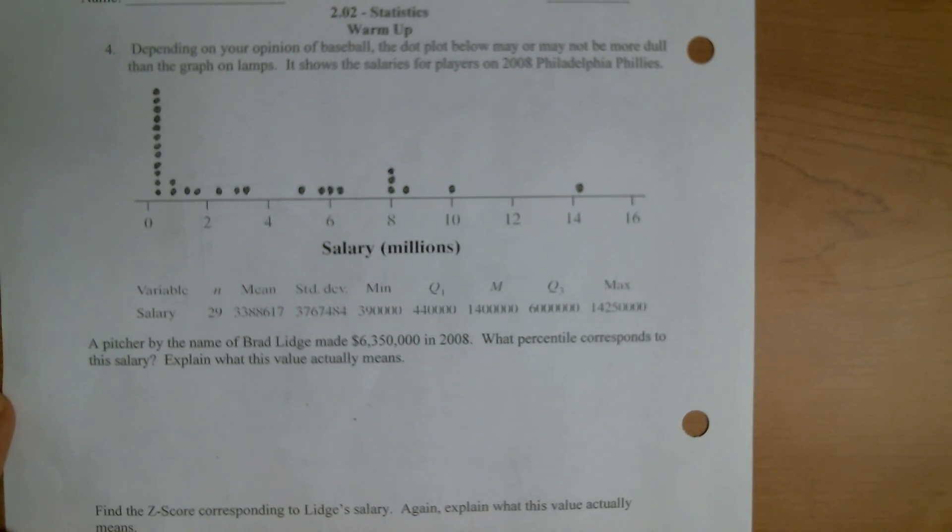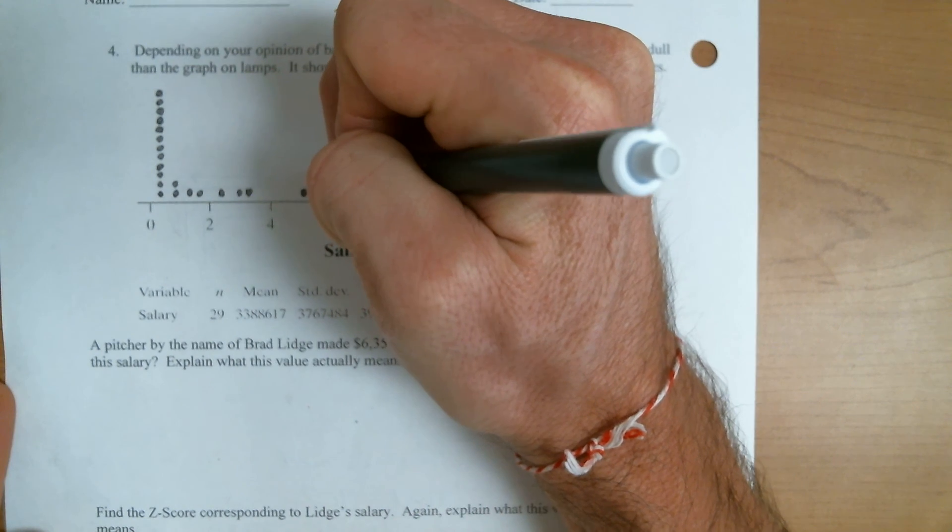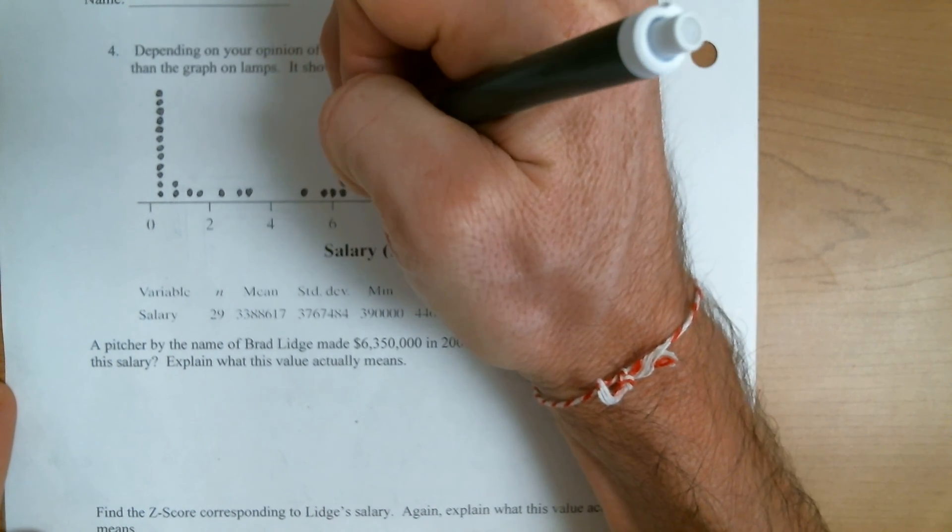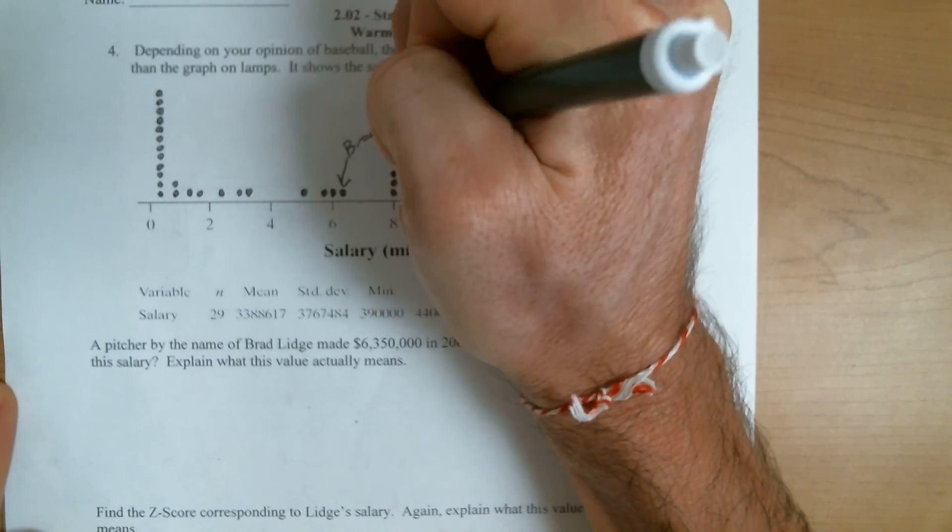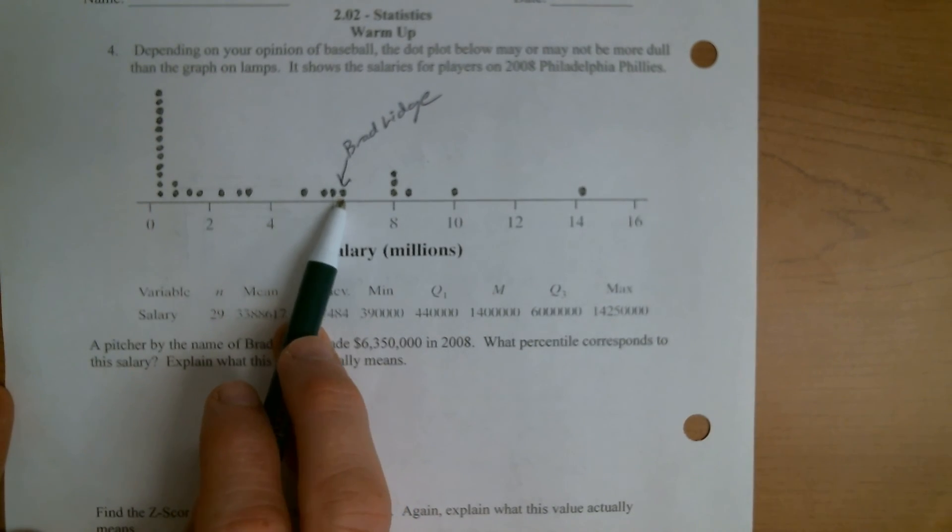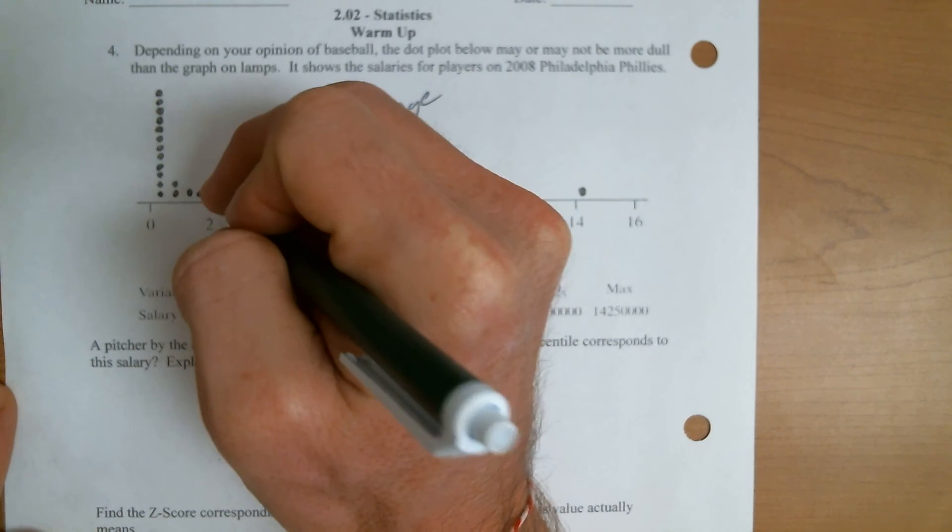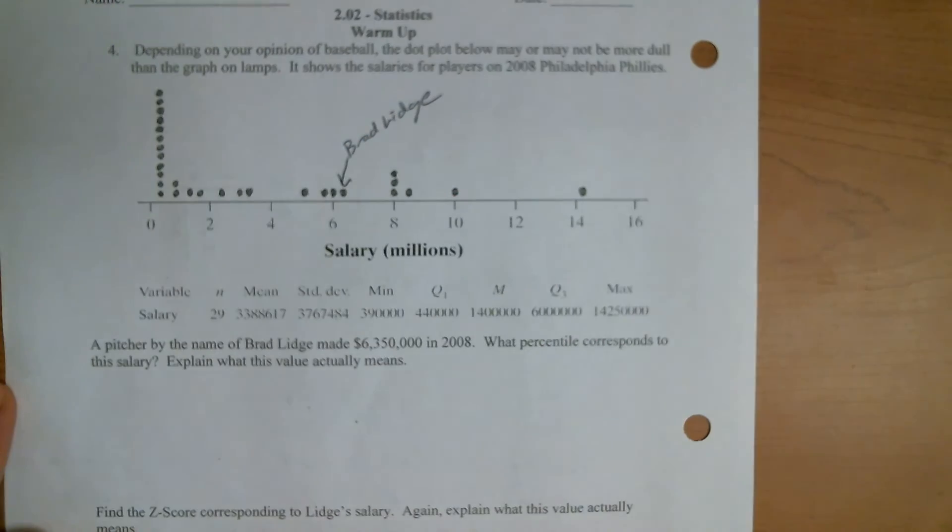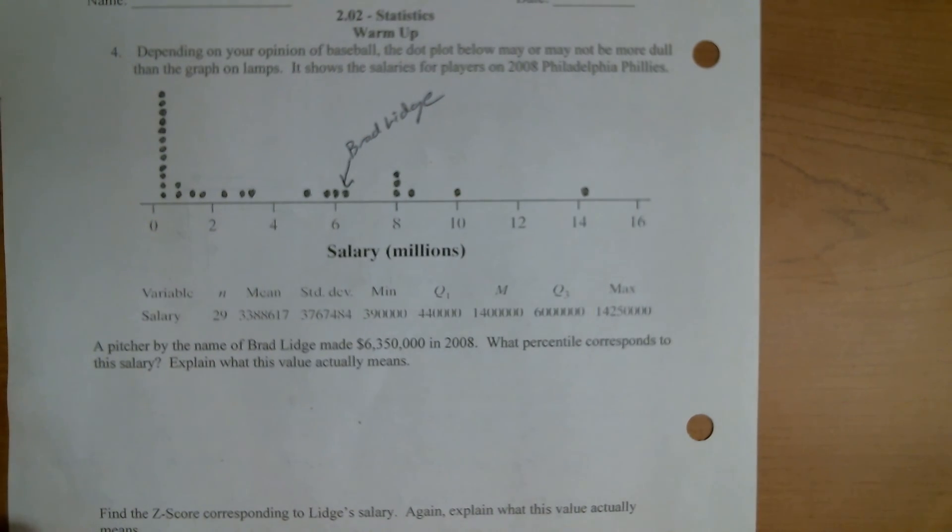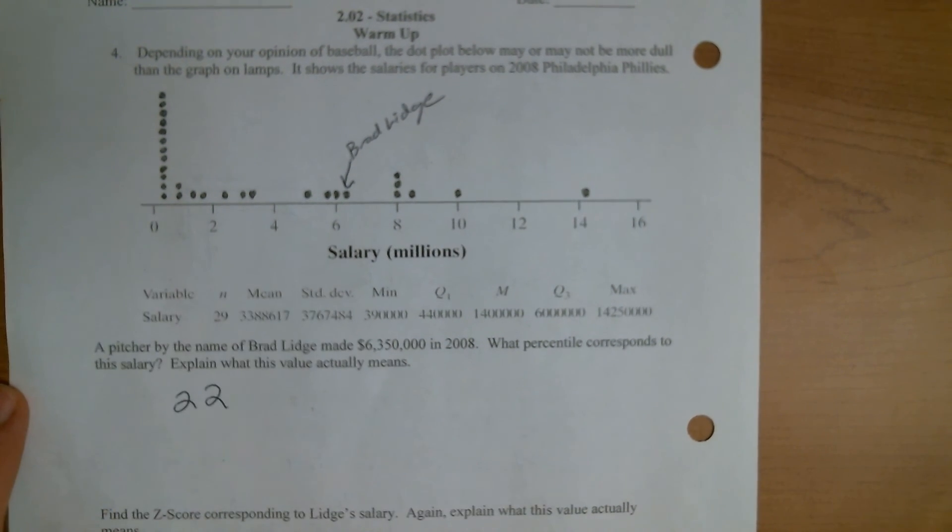So again, percentile is the percent below. So you'd have to start by identifying where Mr. Lidge falls on our graph here. So it's 6.35. That right there is probably Brad Lidge. And then the percentile is the percent below. So I'm not going to count his dot. I'm just going to count the dots below. So one, two, three, four, five, six, seven, eight, nine, 10. And then there's 12 in that last column.